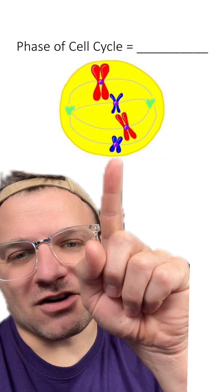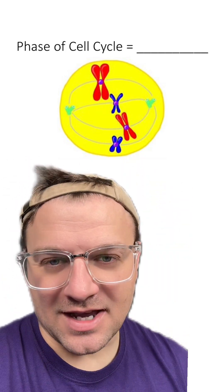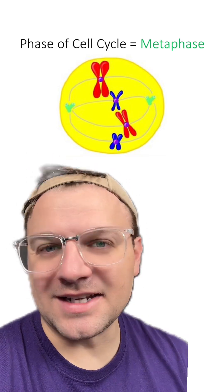Here's our next cell. You can see the chromosomes have aligned in the middle of the cell, which means this cell is in metaphase.